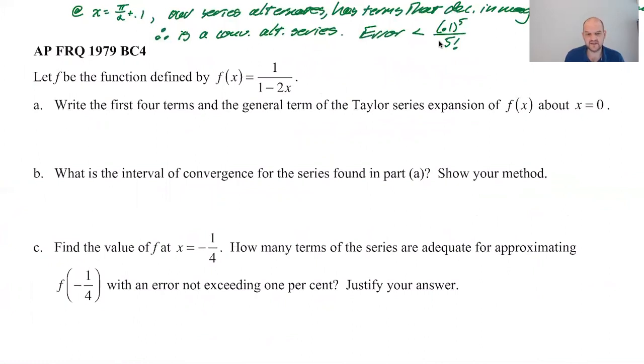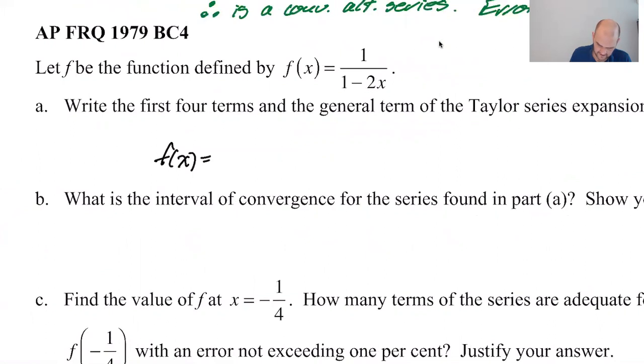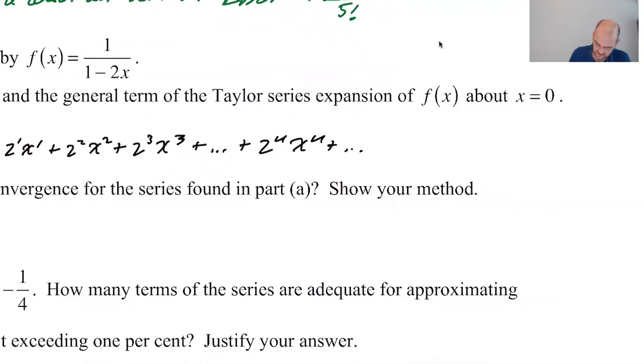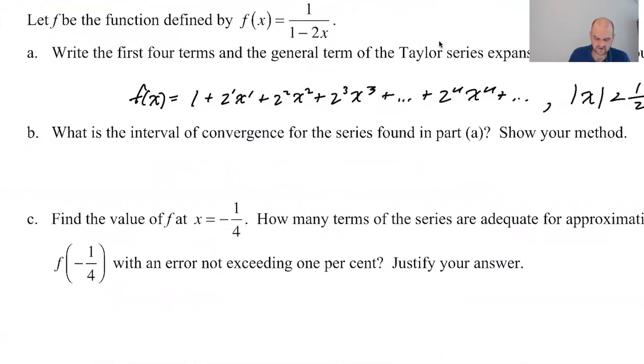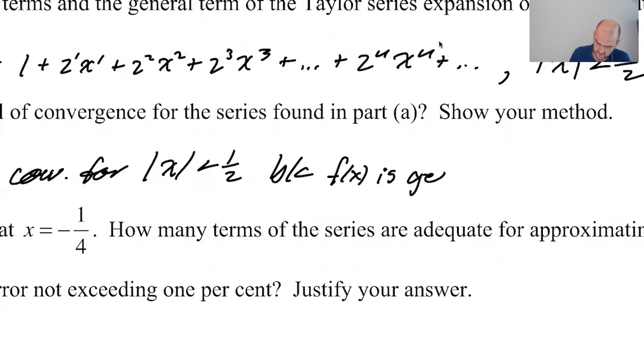This problem's weird. This would never be on the exam now because like, there's nothing to do. Like write the first four terms and this is just geometric. So F of X equals one plus 2 to the first X to the first plus 2 squared X squared, 2 cubed X cubed plus dot, dot, dot, plus 2 to the N X to the N plus dot, dot, dot. That is only true if the absolute value of X is less than one half because the absolute value of 2X has to be less than one. Interval of convergence. So F of X, we already did this, converges for the absolute value of X less than one half because F of X is geo with R equals 2X. Done.